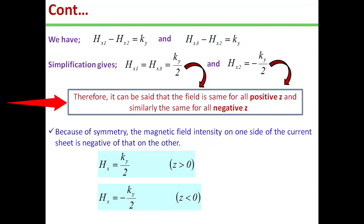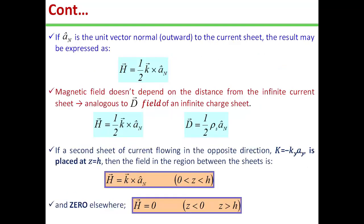Therefore, it can be said that the field is same for all positive z, and similarly the same for all negative z. Because of symmetry, the magnetic field intensity on one side of the current sheet is negative of that on the other. Mathematically, we can write H_x is equal to K_y by 2 for z greater than 0, that means for all positive values of z, and H_x is equal to minus K_y by 2 for all z less than 0, that is for negative values of z.